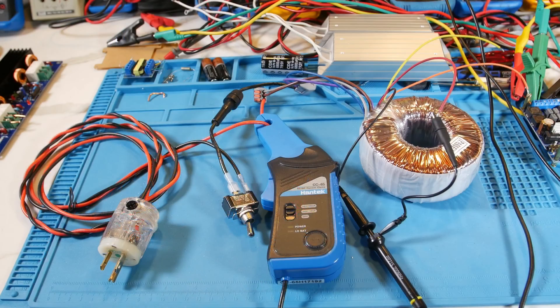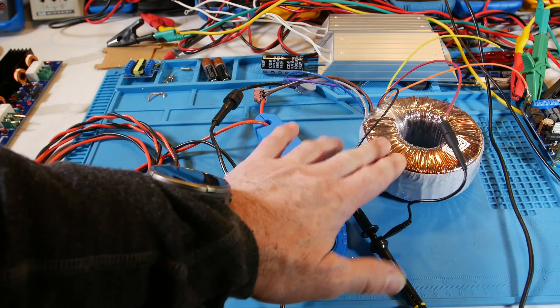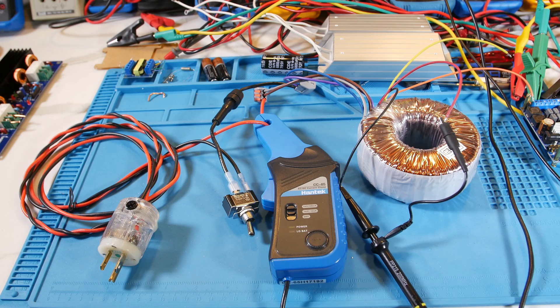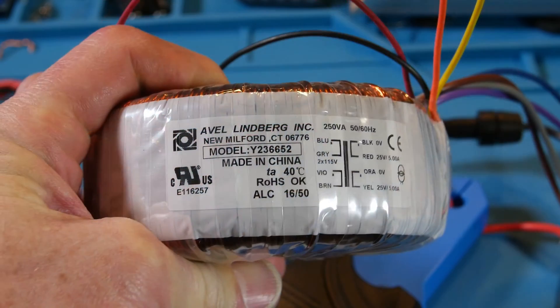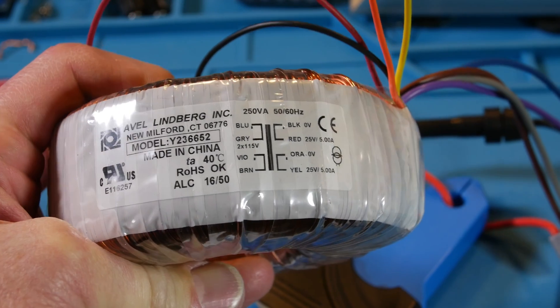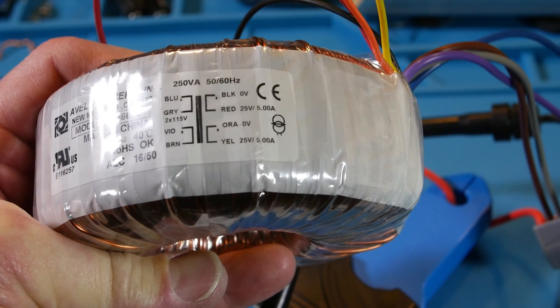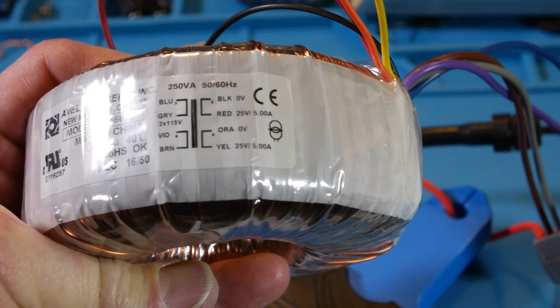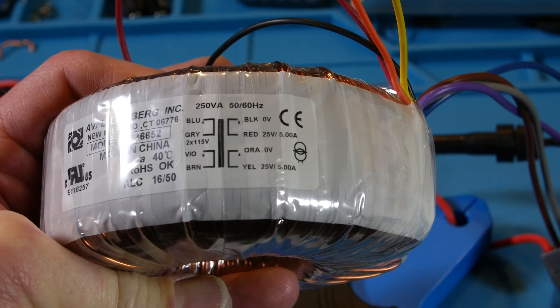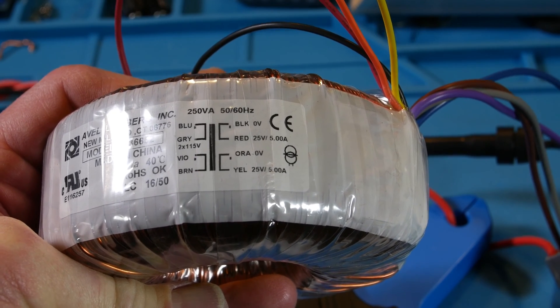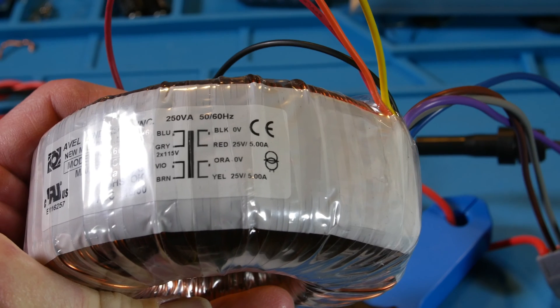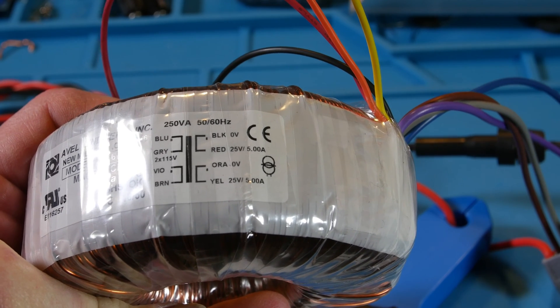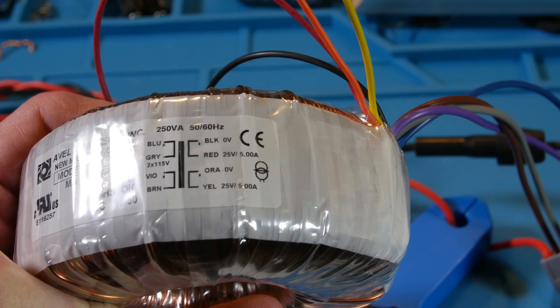As I'm working on this power supply with this big old transformer here, let me zoom in on that. That is the Abel Lindbergh 250 VA made in China, of course, a 50, 60 Hertz transformer. On the left there, it says blue and gray is one winding, violet and brown is the other. Now blue and violet have the dots. On the opposite side, the outputs are 25 volt outputs. It's black and red is the one winding, orange and yellow the other. Black and orange are the dots.